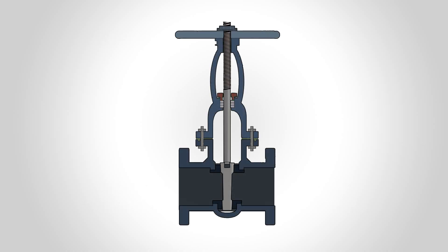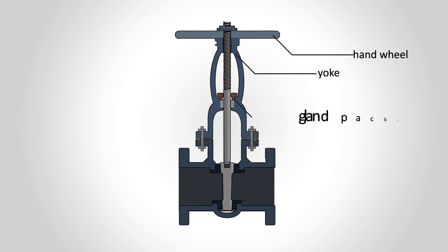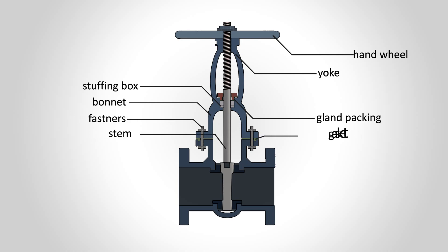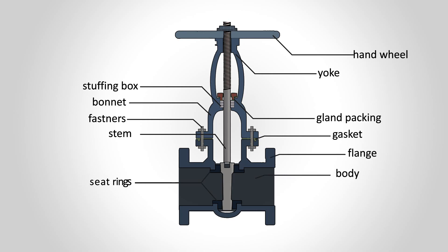Let's see about the parts of a gate valve: Anvil, Yoke, Gland backing, Stuffing box, O-nut, Stem, Fasteners, Gasket, Body, Flange, Seatings, and finally Disc.